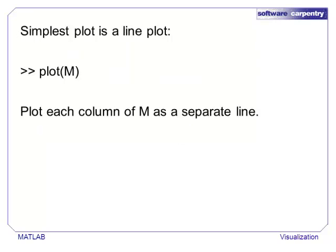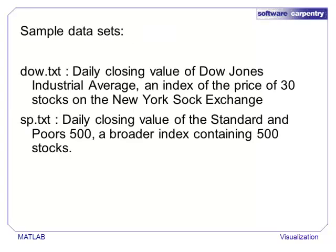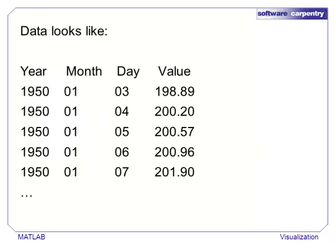MATLAB contains several plotting functions that are highly customizable. The simplest plot function is the function PLOT, which will create a line graph with one data set for each column. In this example, we will use two data sets that contain historical financial data for the Dow Jones Industrial Average and the Standard & Poor's 500. Both files contain four columns. The first three form a date, and the fourth value is the closing value of one of the two indices on that day.